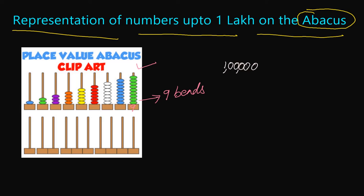The place values are: ones, tens, hundreds, thousands, ten thousands, and lakhs. Now we are going to represent these numbers on the abacus.